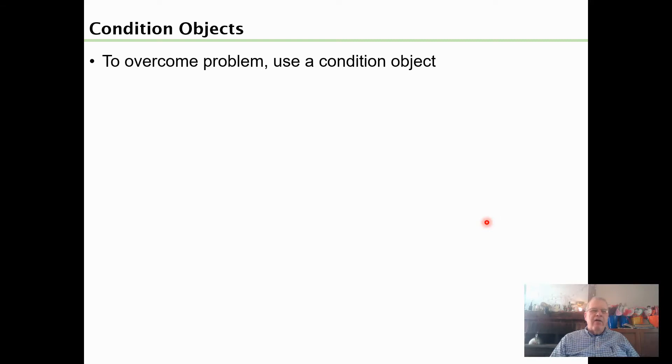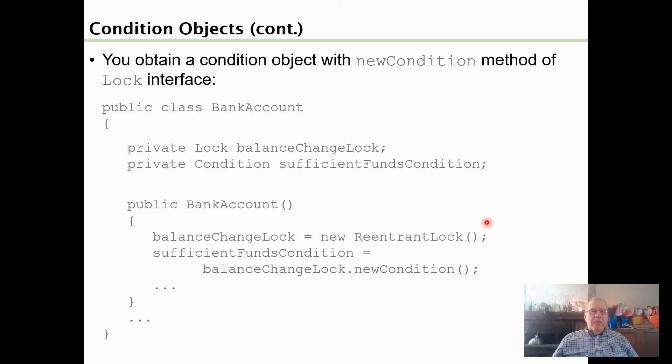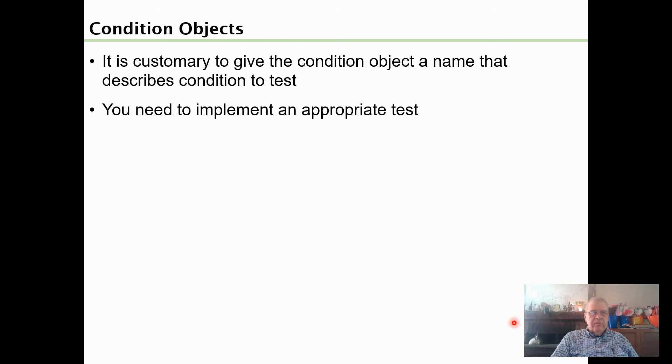To overcome that, we have what's called a condition object. A condition object allows a thread to temporarily release the lock and regain it later. A condition object belongs to a specific lock object. We had this lock object balanceChangeLock, and then condition is sufficientFundsCondition. SufficientFundsCondition returns a condition class that is called by newCondition, but it's called on balanceChangeLock. We want to name these locks and these conditions so that we understand in our coding what they mean.